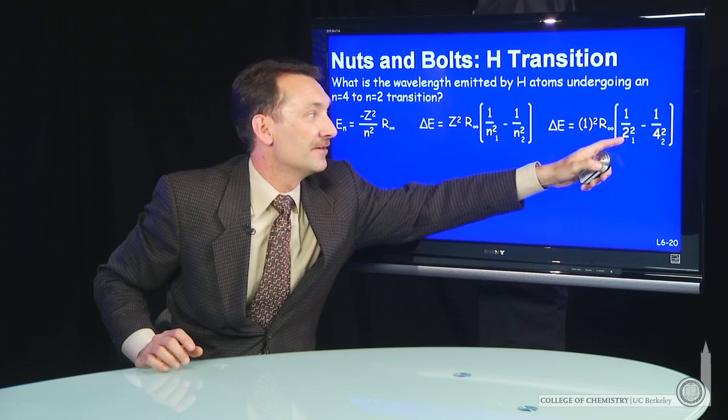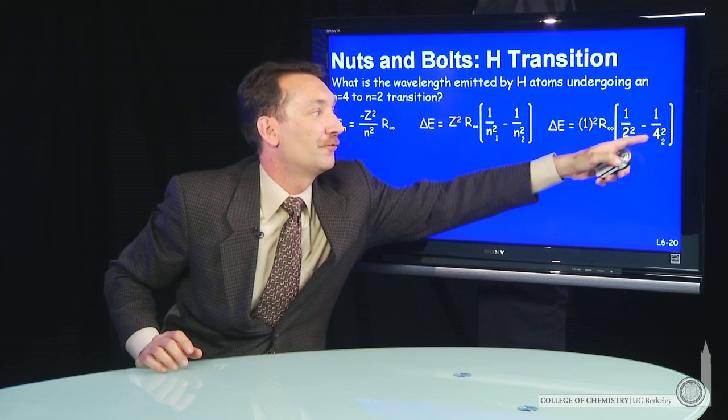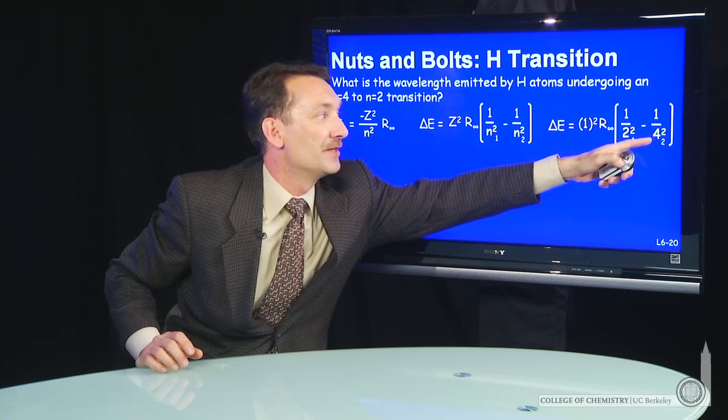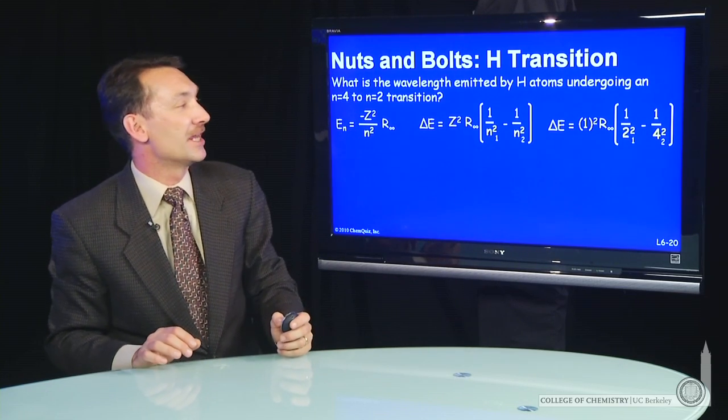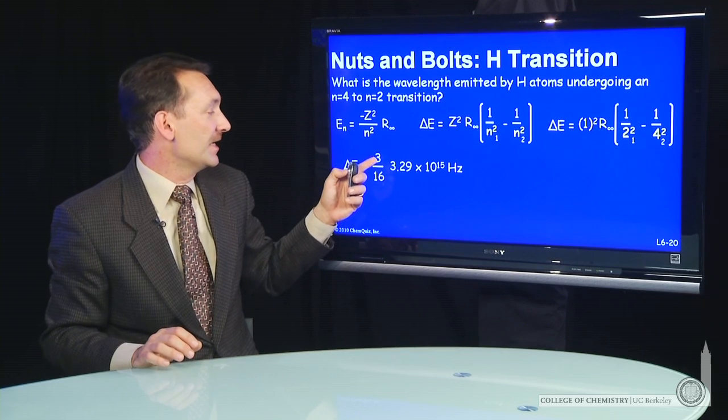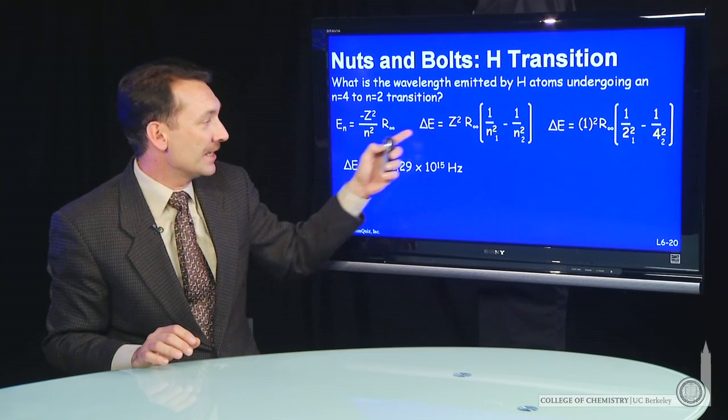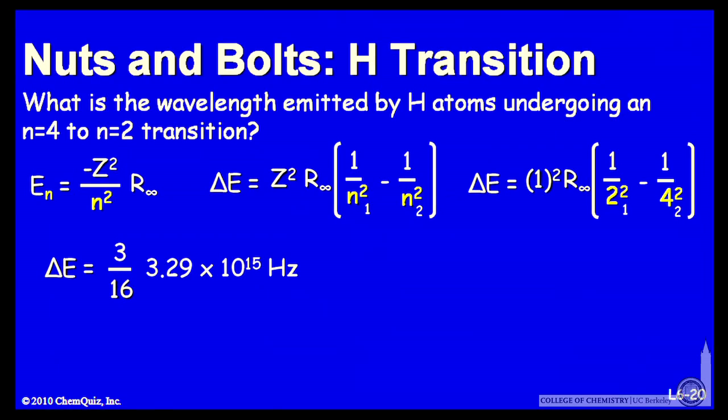The two states from the n equals 2 to n equals 4 state. I'm doing a transition where it's emission. I'm starting out in 4 and going to the n equals 2 state. I can find that that gives me 3 sixteenths times the value of the Rydberg constant.